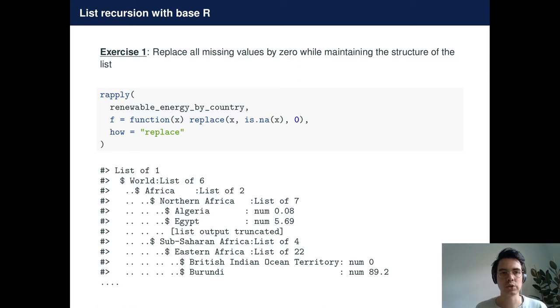It allows us to recursively apply a function F to list elements while maintaining the structure of the nested list by specifying this how argument. So that's quite convenient.